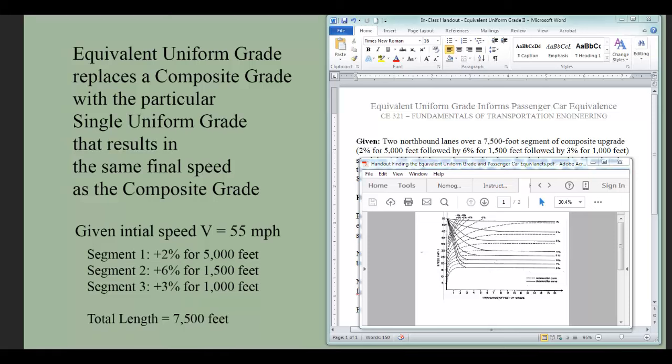We're going to use the acceleration-deceleration curves to figure out at the end of the three segments what that final speed is for a particular heavy vehicle. Then we're going to ask ourselves what singular uniform grade results in that same final speed. Ultimately, that information is going to inform an additional consideration that has to do with passenger car equivalents.